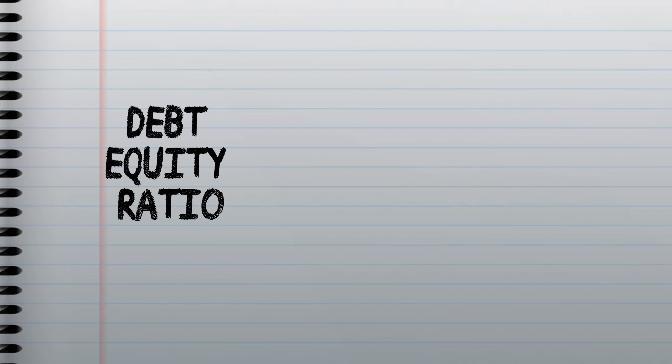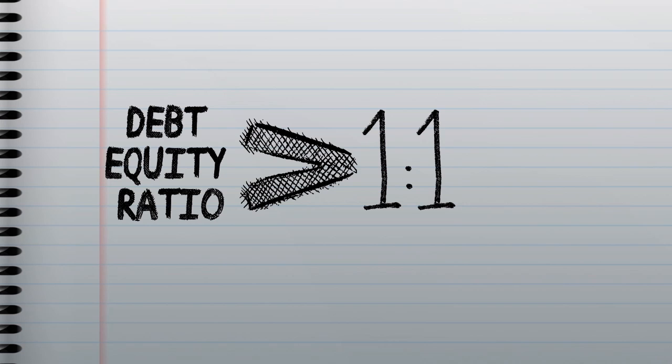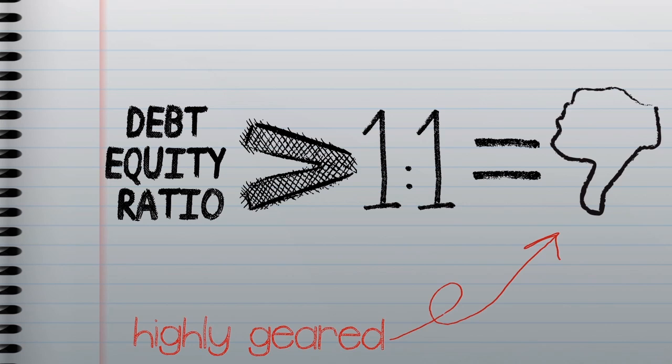The debt equity ratio examines how much long-term debt the business is in. If the ratio works out to be higher than 1:1, we would say the business is highly geared — it has a lot of debt.